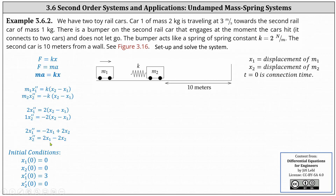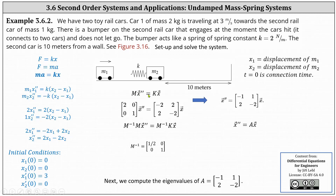The next step is to write the system of differential equations in the form M times vector x double prime equals K times vector x, where M is the two-by-two matrix containing the coefficients of the second derivatives along the main diagonal, giving us the matrix with entries two, zero, zero, one. Matrix K contains the coefficients of x1 and x2, giving us the two-by-two matrix with entries negative two, two, two, negative two. Multiplying both sides by M inverse, we get vector x double prime equals matrix A with entries negative one, one, two, negative two times vector x.